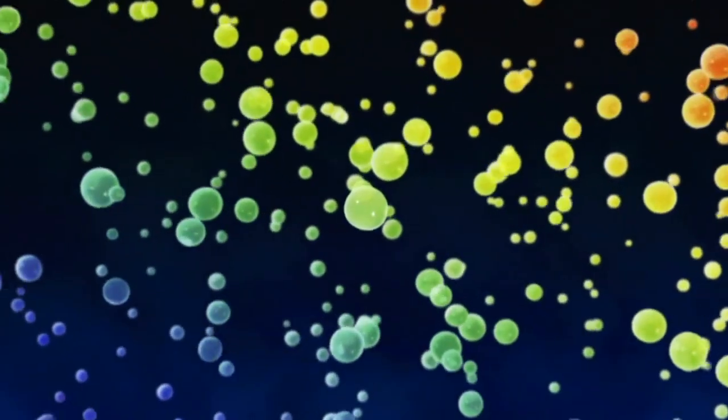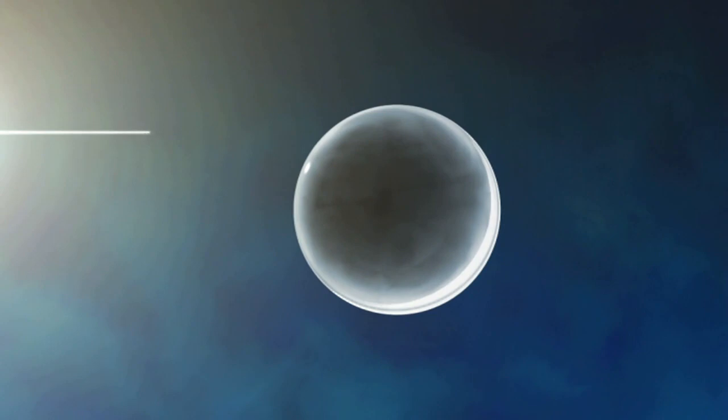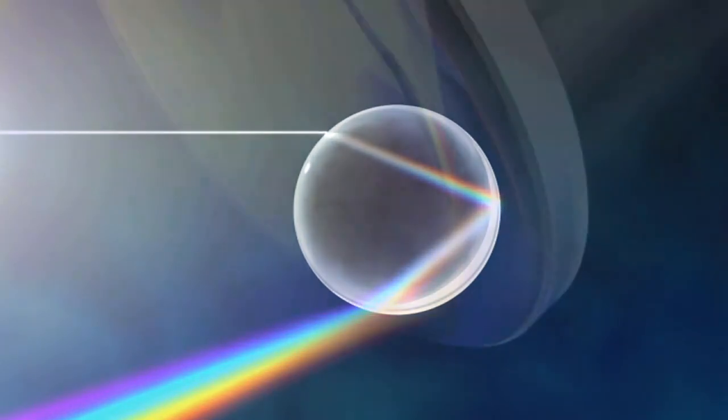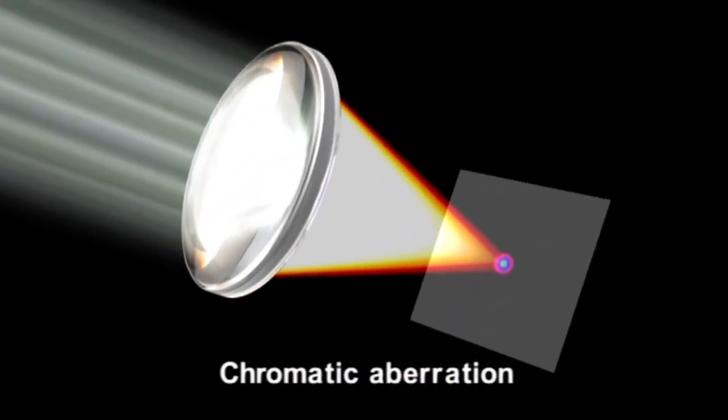There is also the problem of chromatic aberration. A rainbow is formed when the light passing through water droplets is refracted. Different refraction wavelengths cause the different colors of the rainbow. This same principle causes chromatic aberration in lenses.